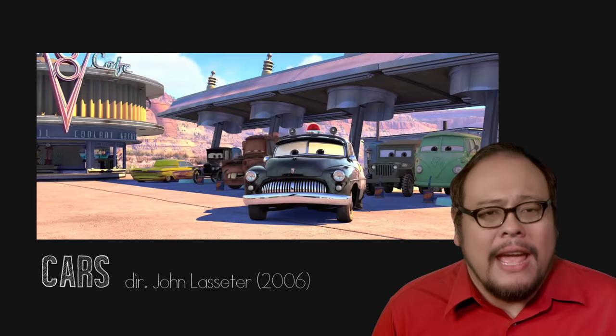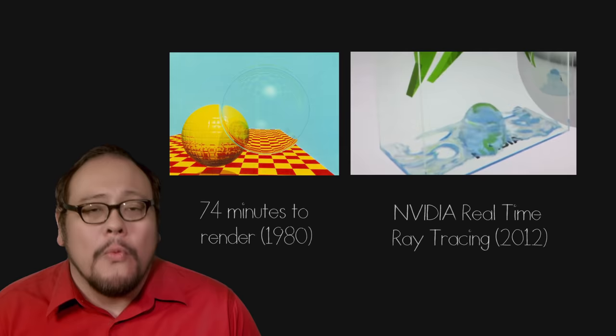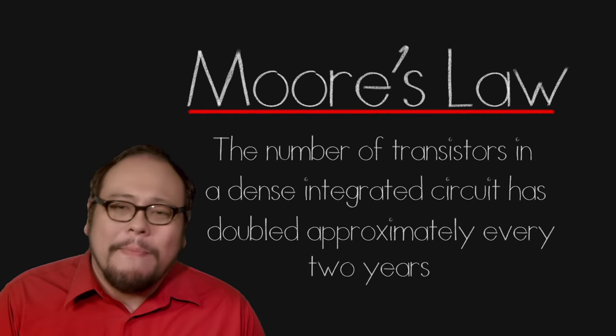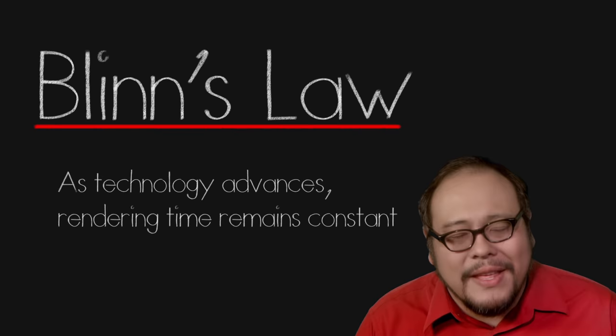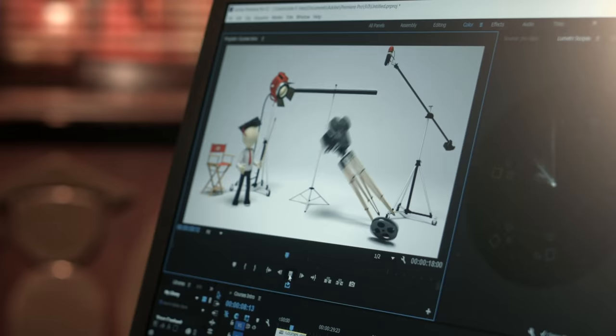What took Turner Whitted 74 minutes to render in 1980 can now be done in a 30th of a second with today's real-time ray tracing, thanks in part to Moore's Law — the observation that the number of transistors in an integrated circuit doubles roughly every two years. However, to balance that out there is something called Blinn's Law, which states that as technology advances, rendering time remains constant: the more our machines are capable of, the more we throw at them. And that's a good moment to thank our sponsor HP and their powerful line of HP Z Workstations — as we ask our machines to do more and more, the HP Z Workstation delivers the power you need to take your innovation to new heights.